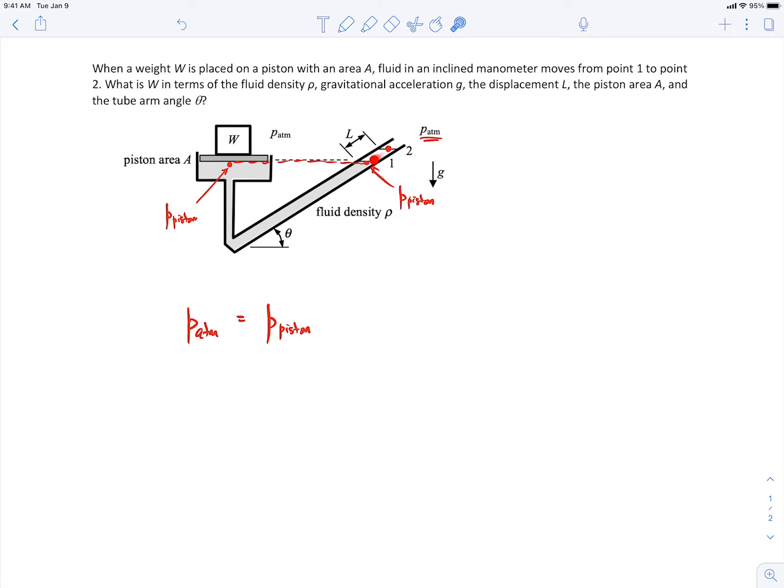So it's P piston there, and then I'm going to go to point 2. And to get to that point, I'm moving upward, so I'm going to subtract out some weight of the fluid. The fluid density is rho. And the vertical distance I move from here to here will be L sine theta.